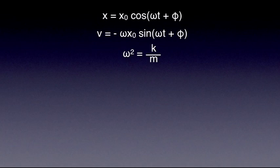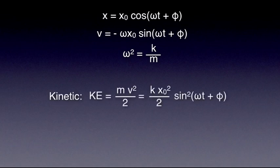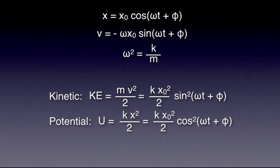Using the expressions on the screen, we can now express kinetic energy as mv squared over 2 or kx0 squared over 2 sin squared of omega t plus phi. Potential energy can be written as kx0 squared over 2 cos squared of omega t plus phi.